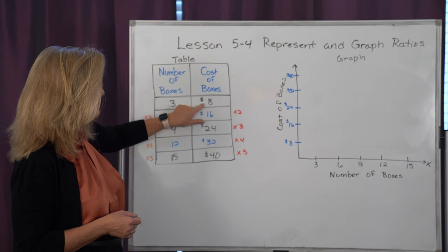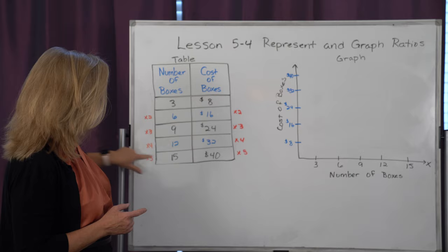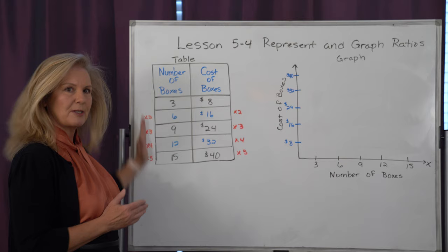And I could do 3 times 4, which is 12 boxes. Therefore, 8 times 4 would be $32. I could do 3 times 5 is 15 boxes. 8 times 5 is $40. So whatever you multiply on this side of the ratio, you have to multiply on that side of the ratio.